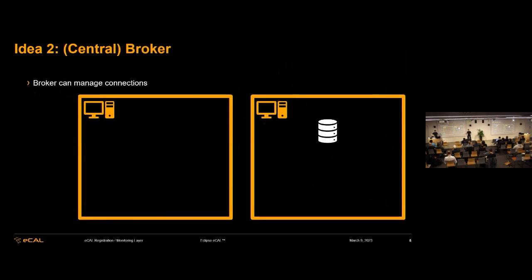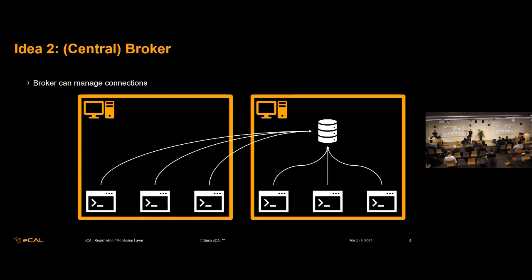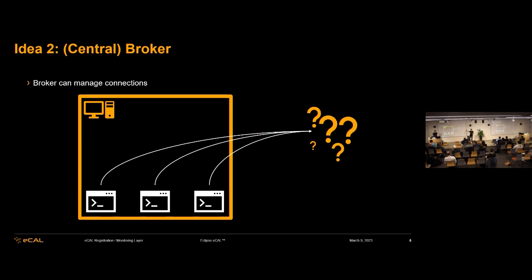A different approach — still not eKAL but a little better — is to introduce a central broker. Every node in our network connects to the central broker. Either data flows over the broker, or the broker just knows how nodes would then connect peer-to-peer individually. However, what happens if the broker goes away? For example, if it crashes or we pull out the PC. We'd have to reconfigure our system again, and we don't want to do that.